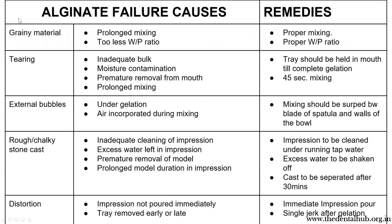Coming to failures and their remedies. If the alginate impression has a grainy look, it may be due to prolonged mixing or too low a water-powder ratio; corrected by proper mixing and following the manufacturer's water-powder ratio instructions. Tearing could be due to less material used, moisture contamination, premature removal, or prolonged mixing; the remedy is to hold the tray in the mouth until complete gelation — 45 seconds of mixing should be observed. External bubbles may be due to undergelation or air incorporated during mixing.